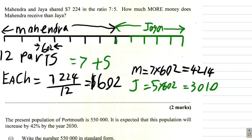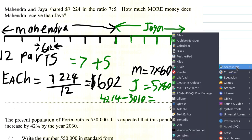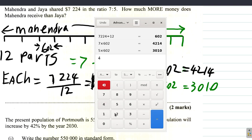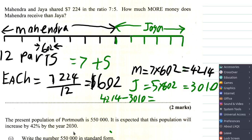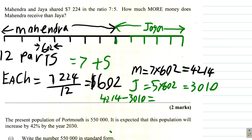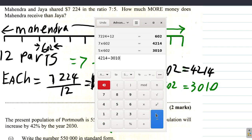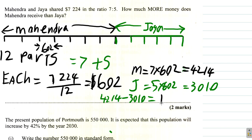Now, how much more does Mahendra get than Jaya? We calculate 4,214 minus 3,010, which equals $1,204. So our answer is $1,204.